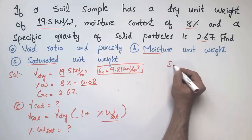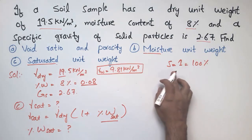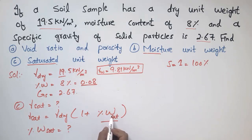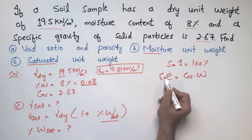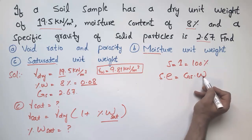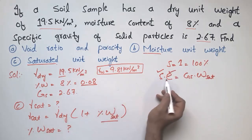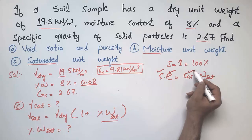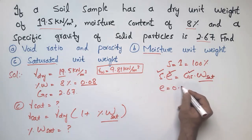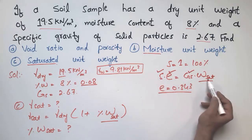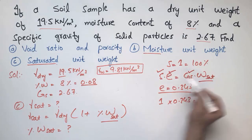For the saturation condition, the degree of saturation S equals 1 (or 100%), since all void spaces are filled with water. To find the water content at full saturation, we use the formula: S × e = G_s × w_sat. All values are known: S = 1, e = 0.343, G_s = 2.67, so only w_sat is unknown.